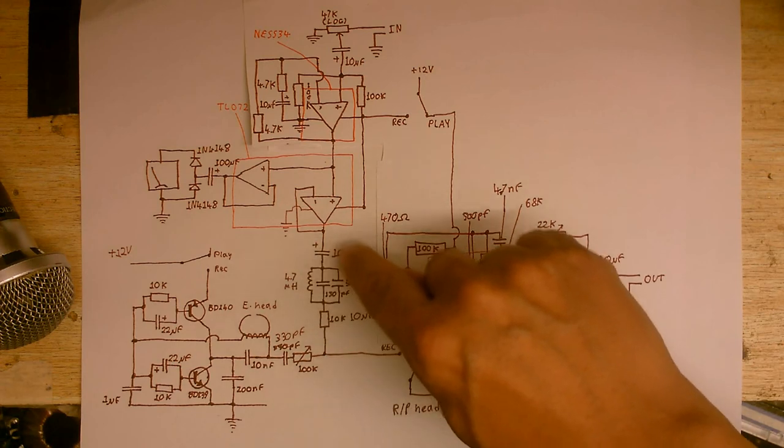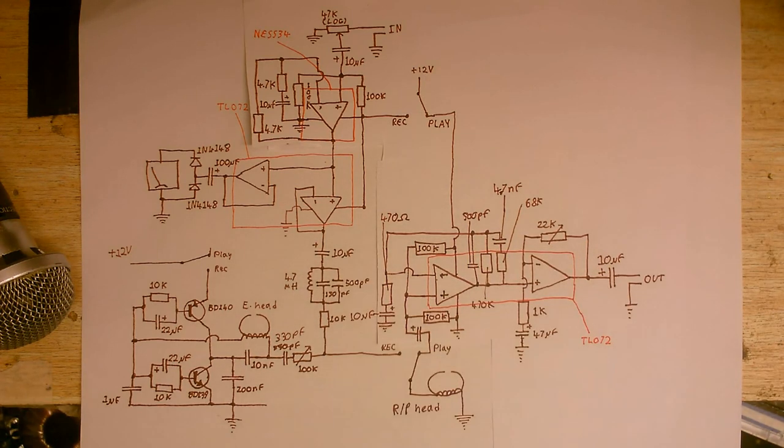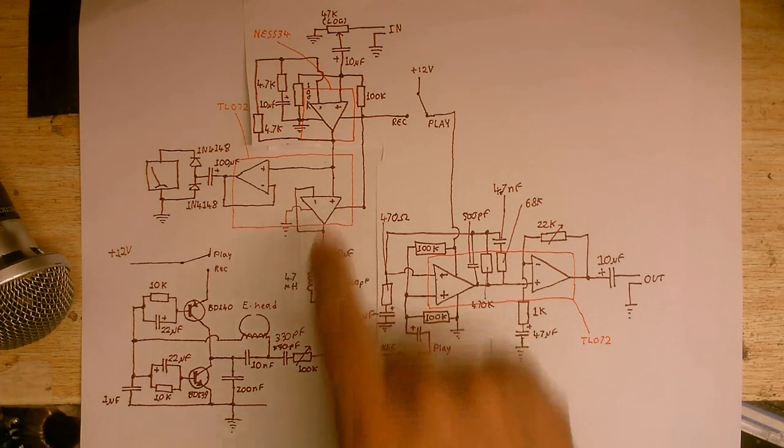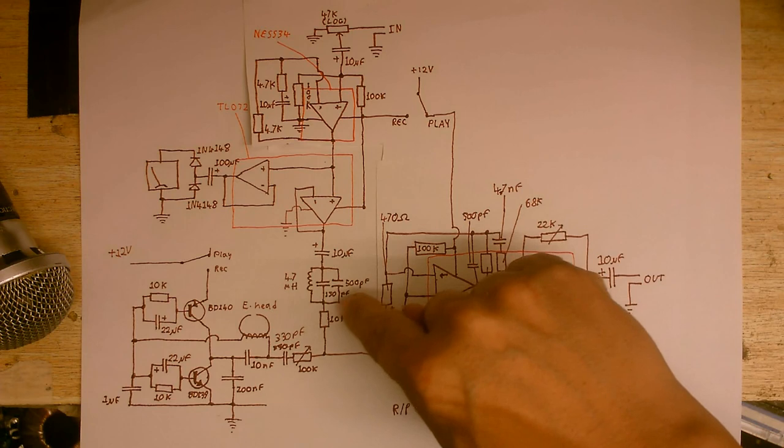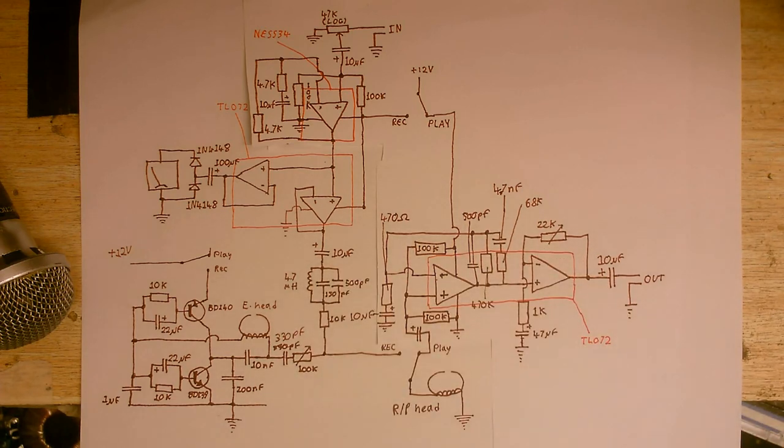This thing here is the bias trap. Now what that does is it stops the high frequency from the bias getting up into the amplifier section. And that's tuned to the same frequency that the bias is oscillating at. These are the particular values I use to get 96 kilohertz.